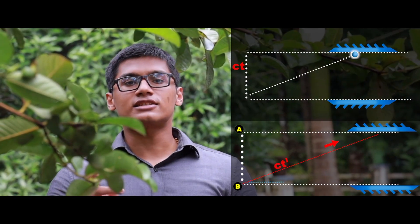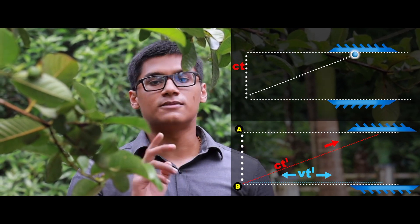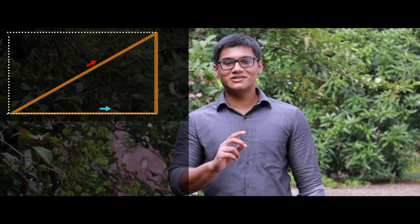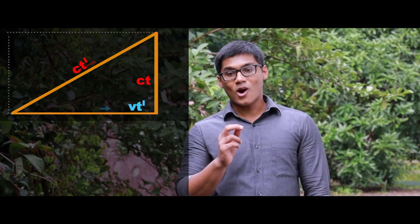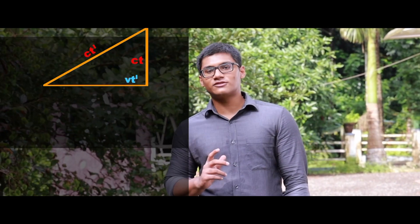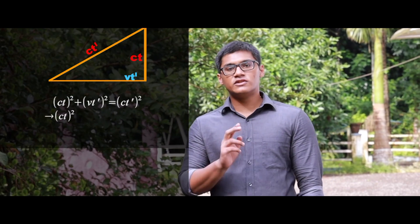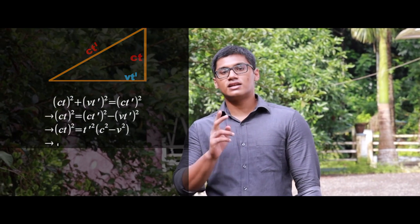And the distance travelled by the system in the time t prime is Vt prime. We got a right triangle with ct prime as the hypotenuse. Now it's time to apply Pythagoras theorem. The Pythagoras theorem gives us the equation: (ct prime)² = (Vt prime)² + (ct)².